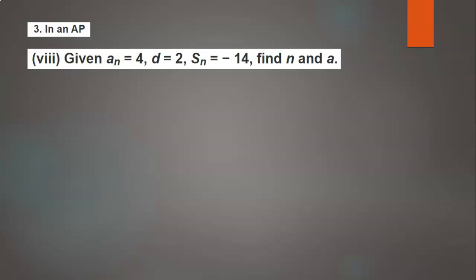Hello to everyone, welcome back to our channel. Today's question: given nth term is 4, common difference is 2, and sum of n terms is -14, we need to find the value of n and a.